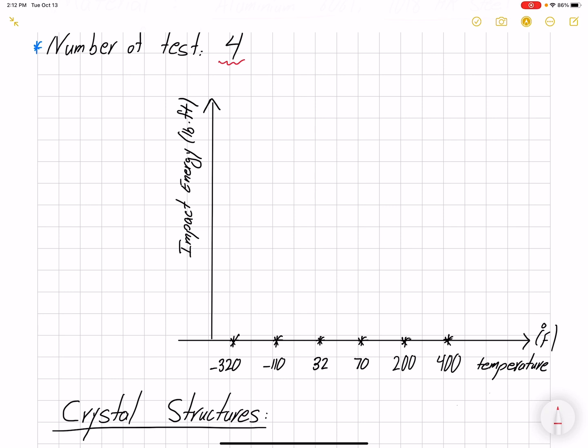For each temperature, we can plot the average value. Because we have different data points, we can plot error bars as well. These error bars can represent different things: mean and max data point, or standard deviation.